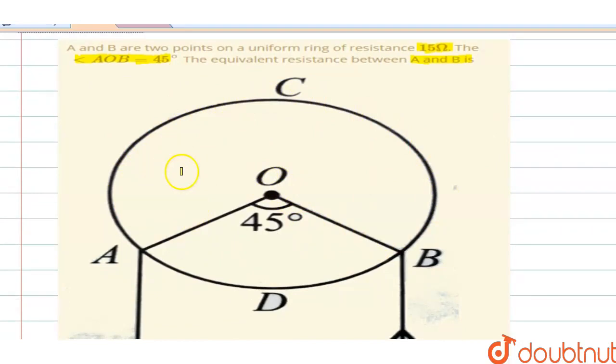The angle AOB is 45 degrees, and you have to find the equivalent resistance between points A and B. So between these points you have to find the resistance.